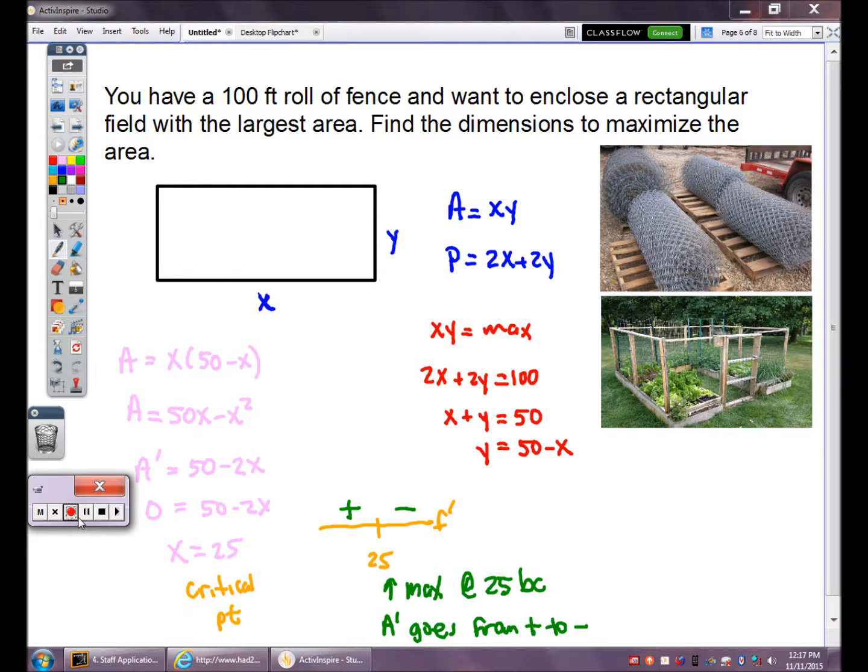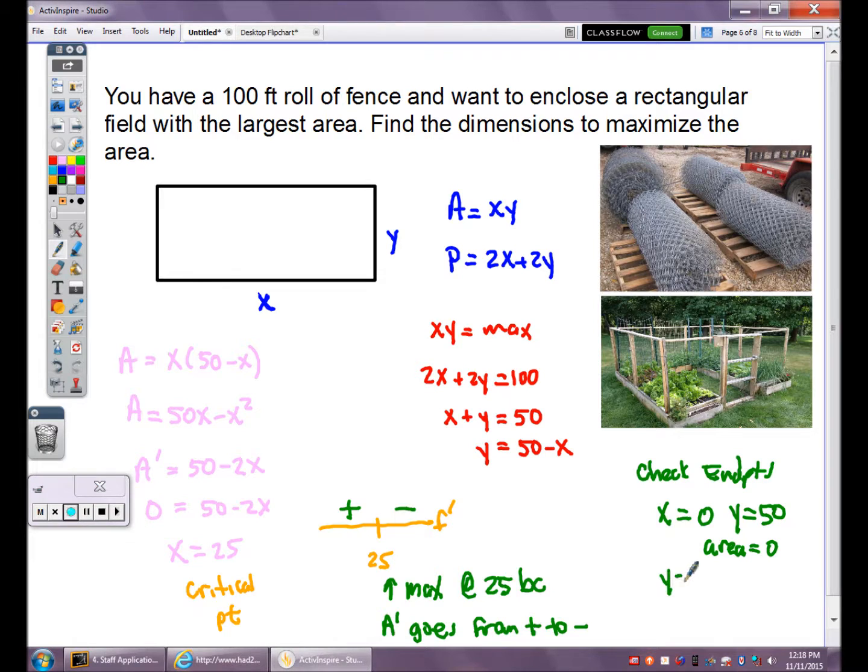You also need to check your endpoints. In this case, your endpoints would be zero and 50. If you did X times Y, your area is zero. We also could have had Y equals zero and X equals 50, but again, your area equals zero. So the best X value I would want is 25.